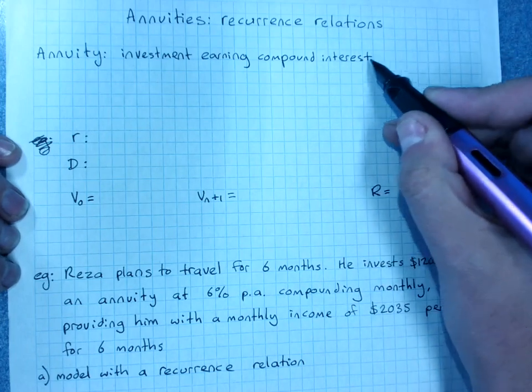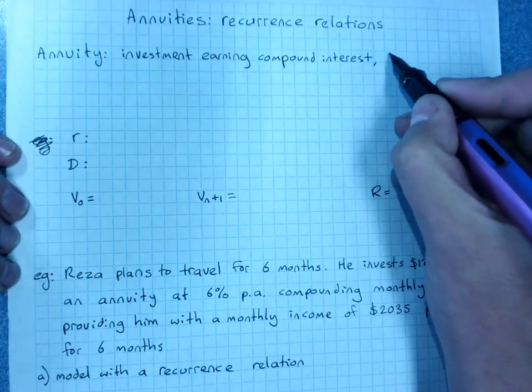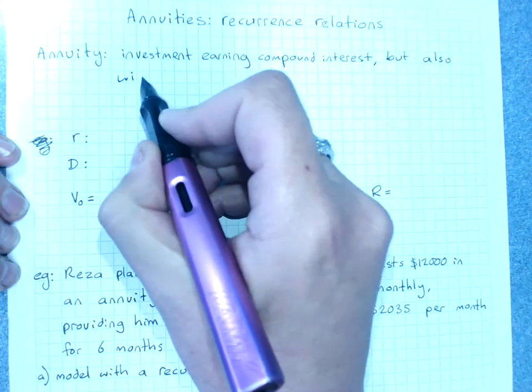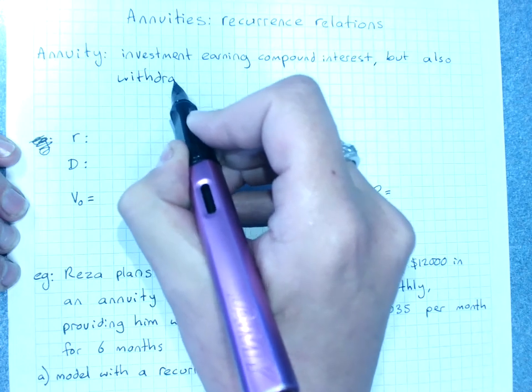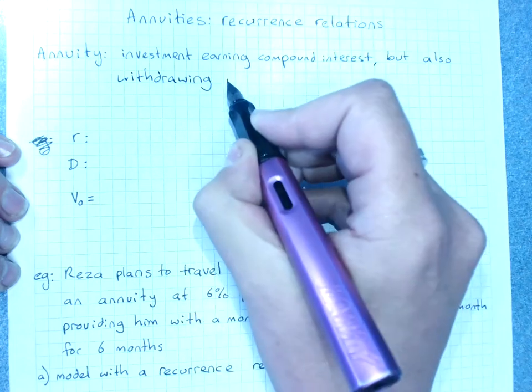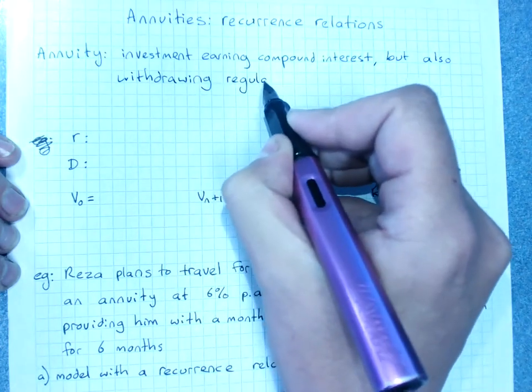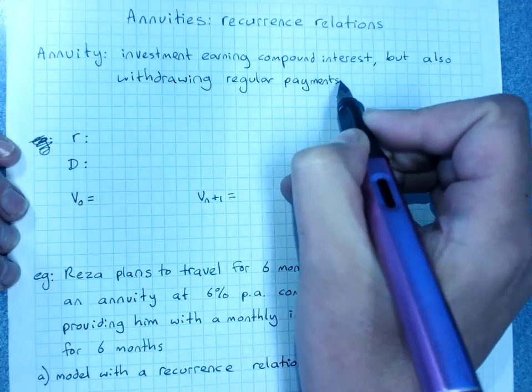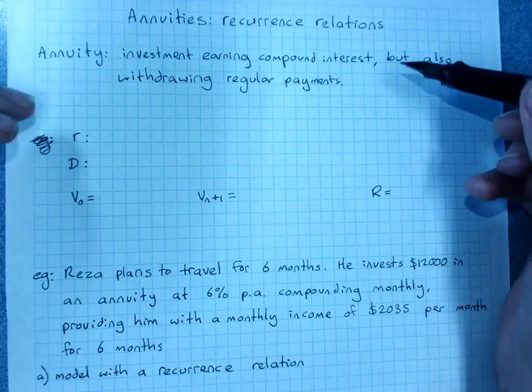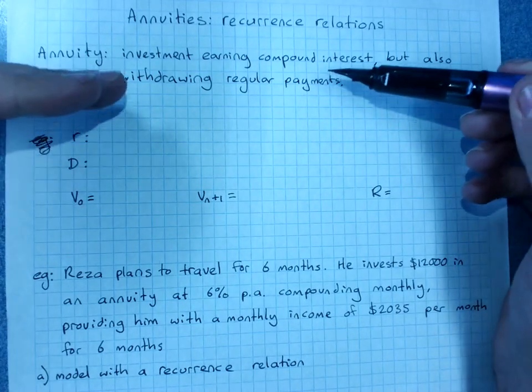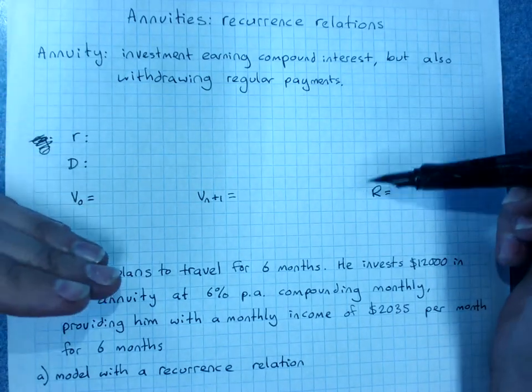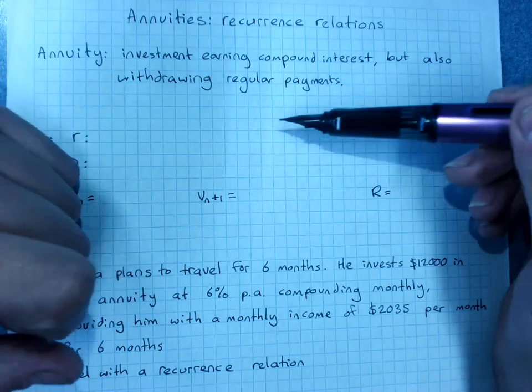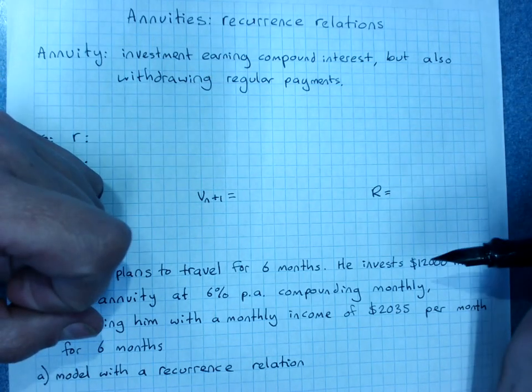So earning compound interest, but also withdrawing regular payments. Now normally the annuity will be intended to be drawn down, so you're withdrawing bigger payments than the interest you're earning, so over time it becomes worth less and less.